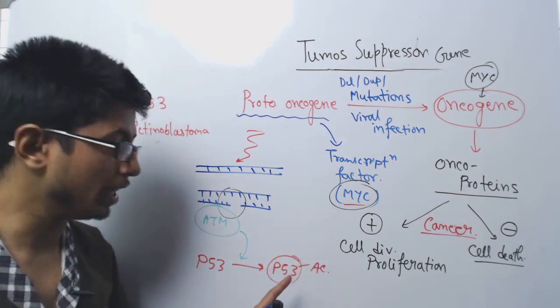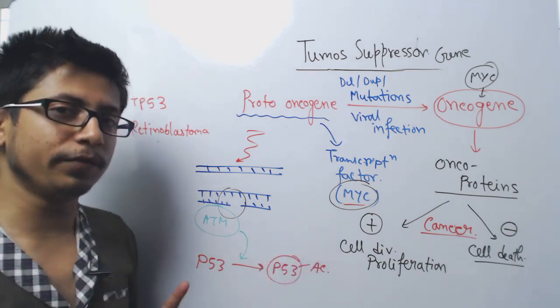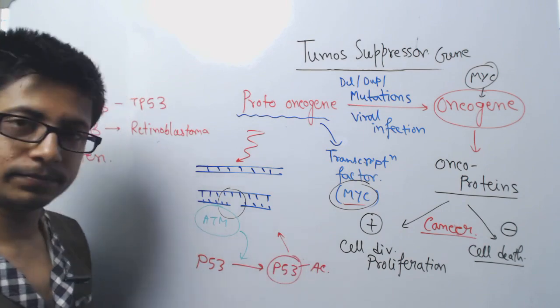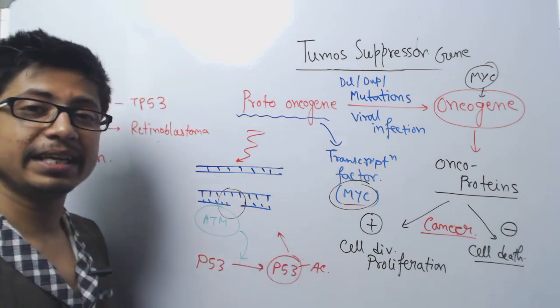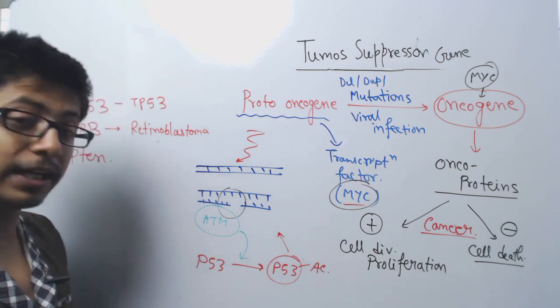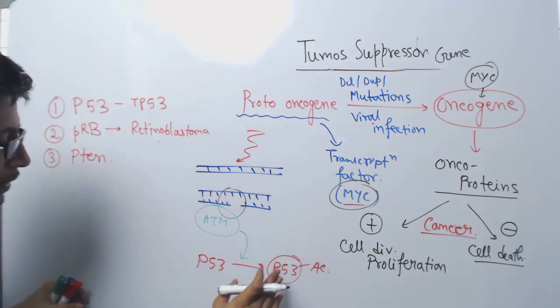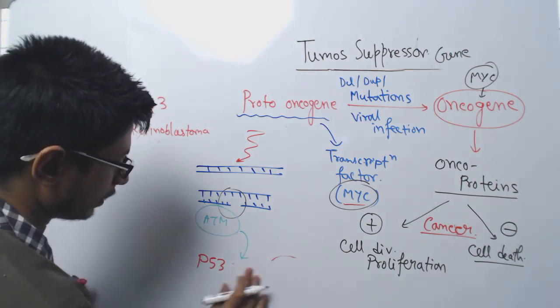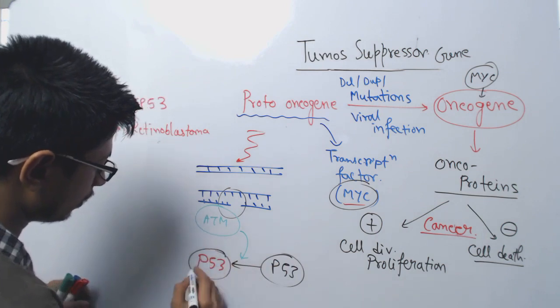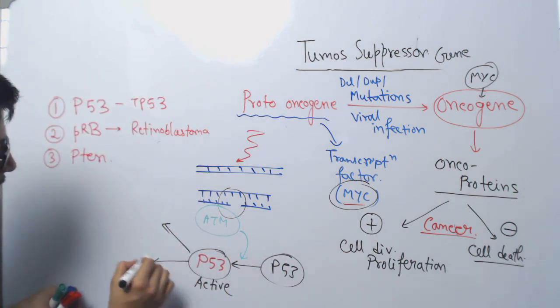Now the P53 is active. Once P53 gets activated, it can do two different things. This P53 will decide either this damage should be repaired. So there are two options. This is the active form, and it provides two signals.